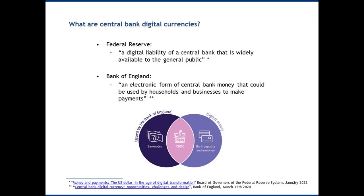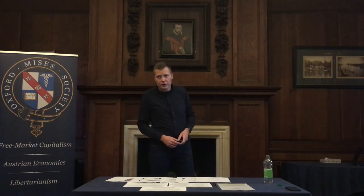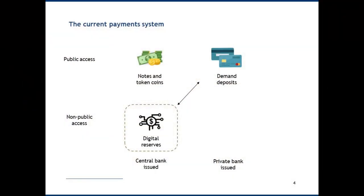The Bank of England explains it by contrasting existing digital money — such as bank deposits and debit card payments — with banknotes and coins issued by the central bank. Central bank digital currencies are intended to be a middle ground: a digital currency issued by the Bank of England, as opposed to by the commercial banking system.